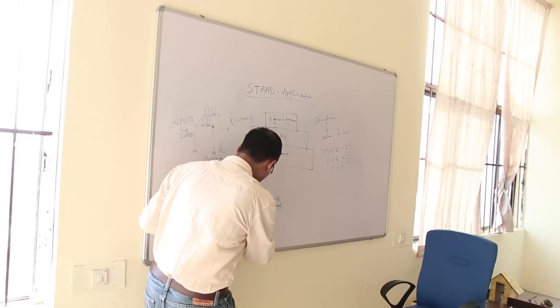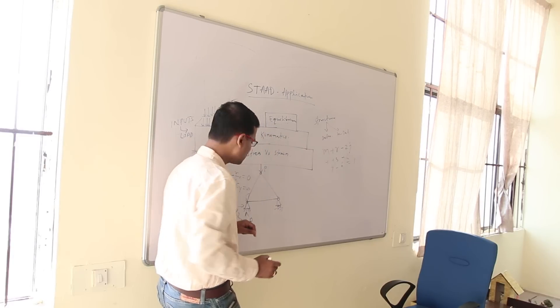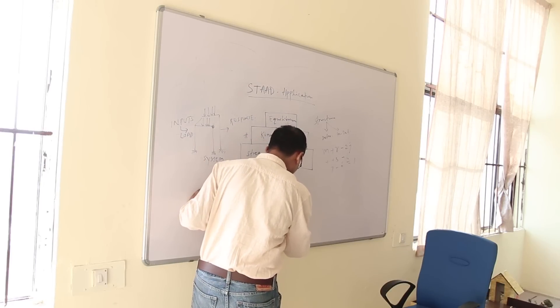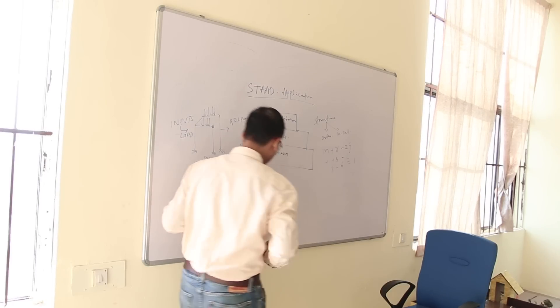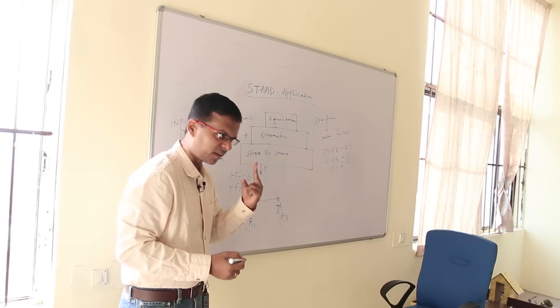What about roller? This is 3. So this is the strain only in this direction, R3 let's say. So how many reactions are not known to me? 3. This is R, this is 3 here.